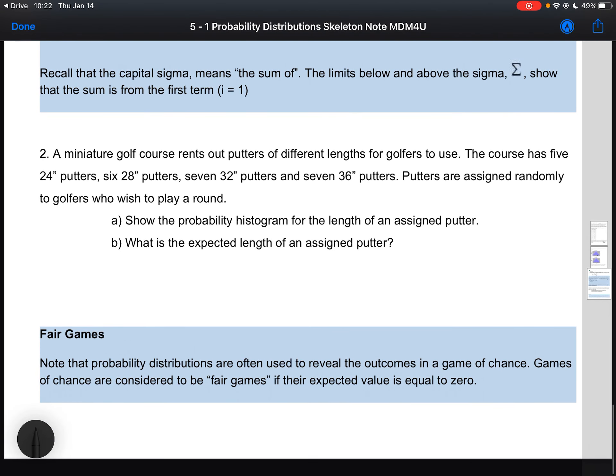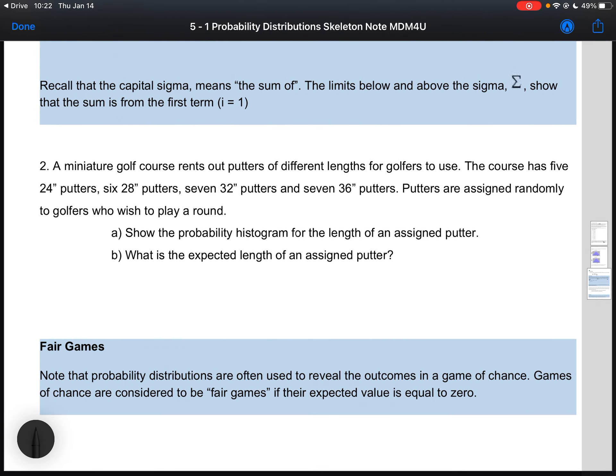The next example is about a miniature golf course renting out putters of different lengths for golfers to use. The course has five 24-inch putters, six 28-inch putters, seven 32-inch putters, and seven 36-inch putters. They're assigned randomly to golfers who wish to play a round.